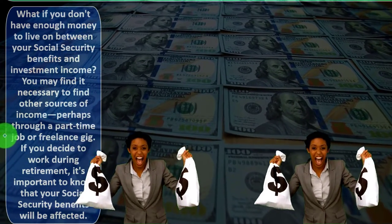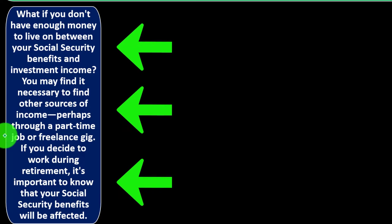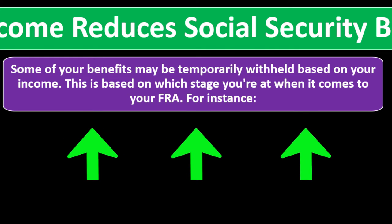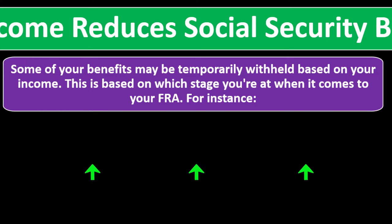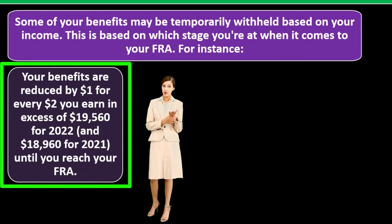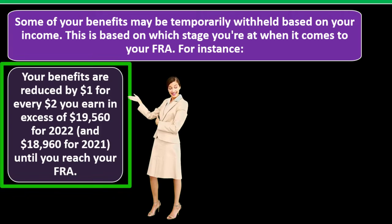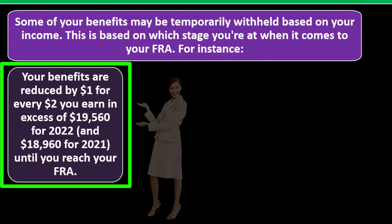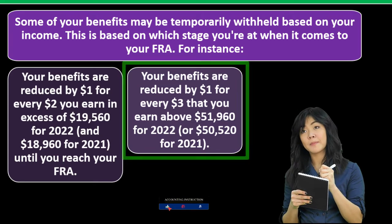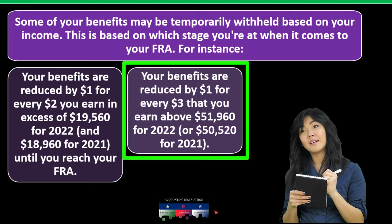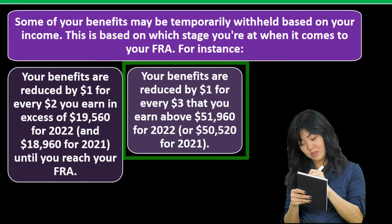If you decide to work during retirement, it's important to know that your Social Security benefits will be affected — some benefits may be temporarily withheld based on your income, depending on which stage you're at relative to your FRA. Your benefits are reduced by $1 for every $2 you earn in excess of $19,560 for 2022 ($18,960 for 2021) until you reach your full retirement age.